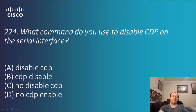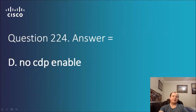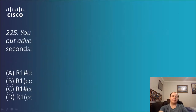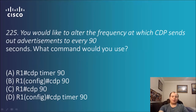Question 2.24: what command do you use to disable CDP on a serial interface? Options include disable CDP, CDP disabled, no disable CDP, and no CDP enable. Not many of those make sense, but Cisco loves the word 'enable' in their syntax — the answer is D — no CDP enable.